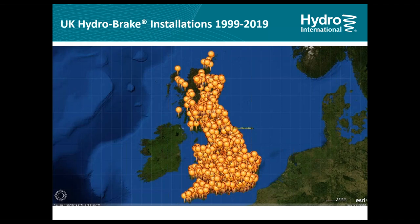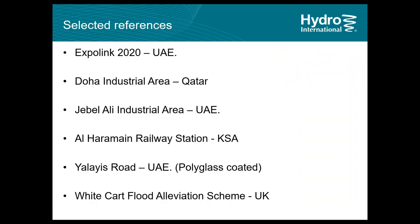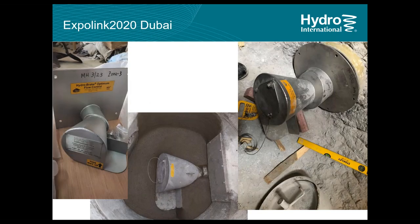The HydroBrake Optimum has been used extensively in the UK and we have over 30,000 installations worldwide. I'll share a few selected references from the region. The first is Expo 2020 — a very prestigious project for us. The units supplied range in size from very small to large, with discharge flow varying between 10 liters per second up to 200 liters per second. One special unit has a circular mounting plate, designed so it could pass through a 600 mm manhole cover where the concrete chamber was already constructed.